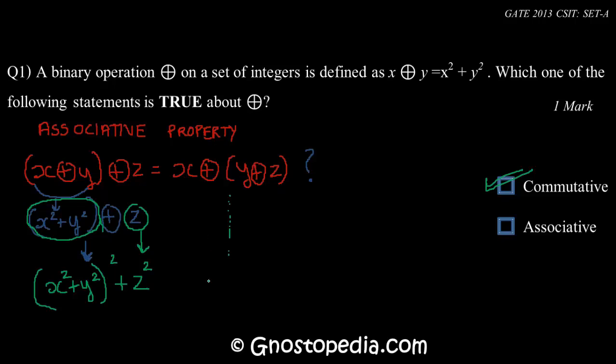Similarly, on the right-hand side, I get x²+(y²+z²)². The blunder that students make is they forget the whole square in both the LHS and RHS, due to which we feel that the property of associativity holds true, but actually that's not the case.